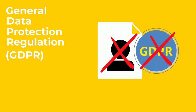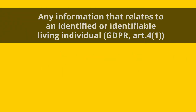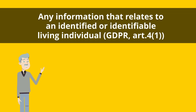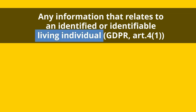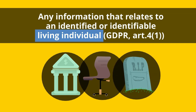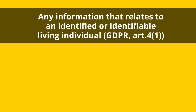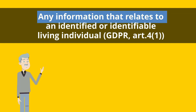So what is personal data? Personal data is any information that relates to an identified or identifiable living individual. Firstly, personal data is about living individuals — information about organizations, inanimate beings, or deceased individuals does not constitute personal data. Secondly, personal data can be any information that relates to an individual.